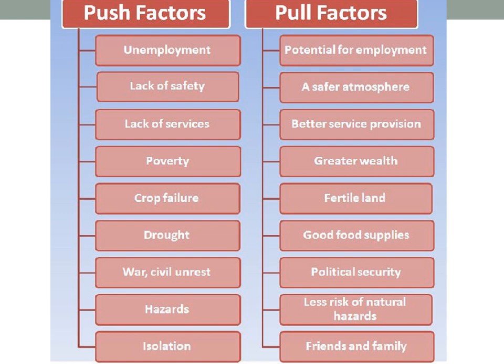Let's take a look at some examples of push and pull factors. Before we go through all these examples, I want you to label them using ESPN-DC: economic, social, political, environmental, demographic, or cultural. At the end, I want you to add a few more — two or three more examples of push factors that would drive people away and corresponding pull factors that might pull them to a new location. The more examples you've seen and heard, the better off we'll be.